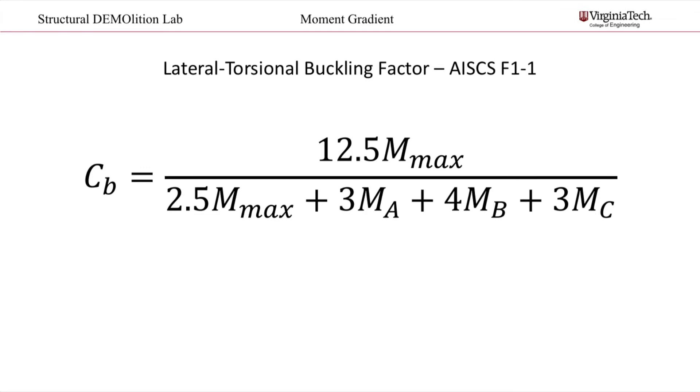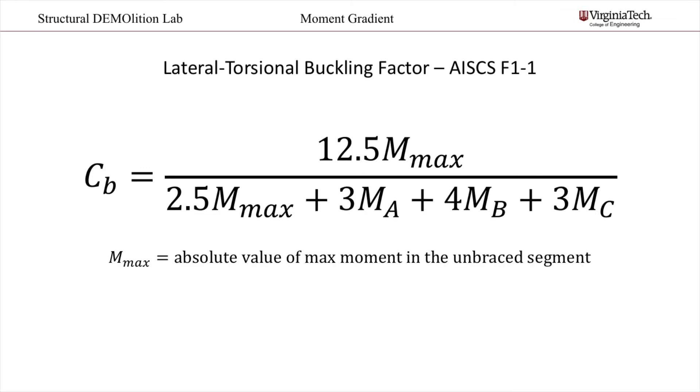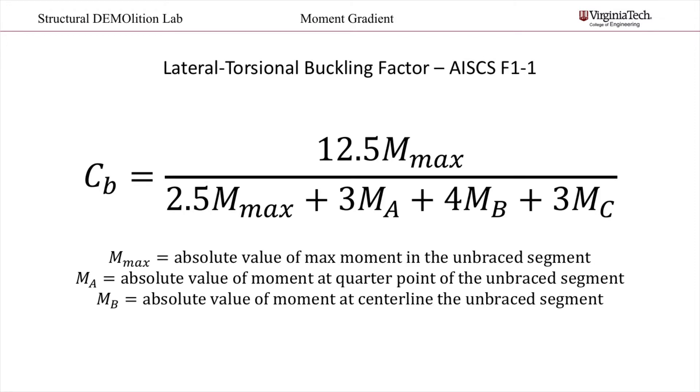The equation is fairly straightforward. The MX value is the greatest moment along the unbraced span. The MA value is the internal moment measured at one-fourth of the span. The MB value is measured halfway along the span. And MC is measured at the three-fourths point. Also note that these are the absolute values of these moments. So even if it is a negative moment, you will plug it into the equation as a positive.